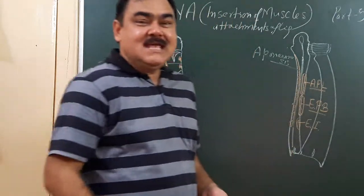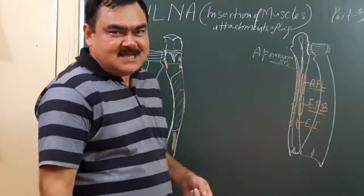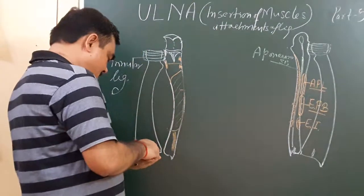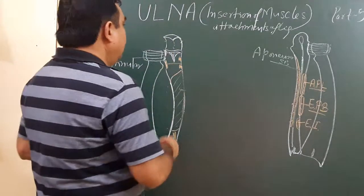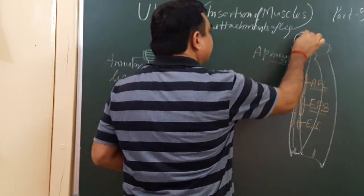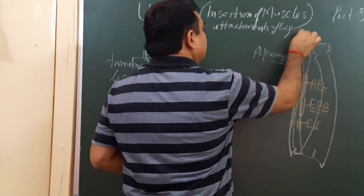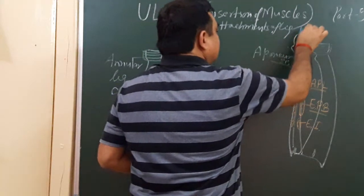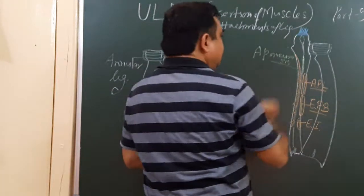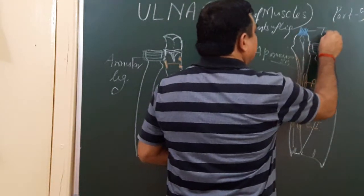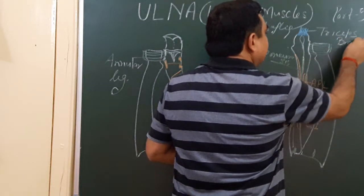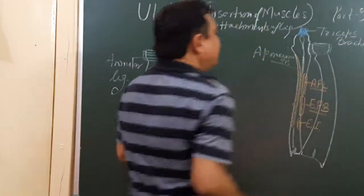I will discuss the insertion of muscles on the ulna. Here, this is the olecranon process, where one muscle is inserted. This muscle is the triceps brachii.